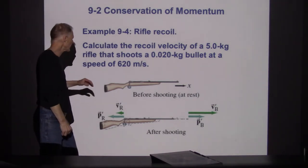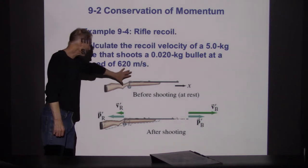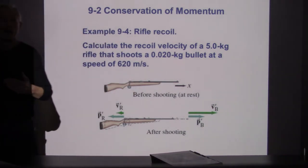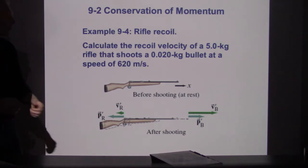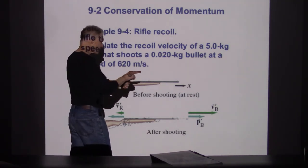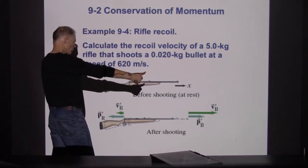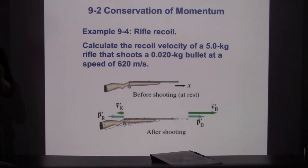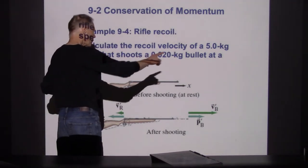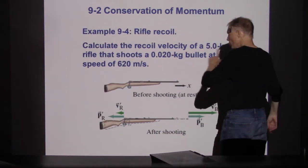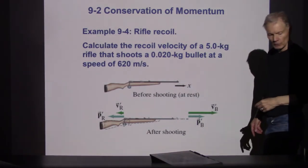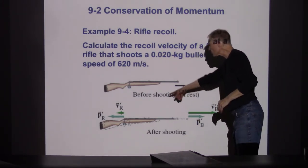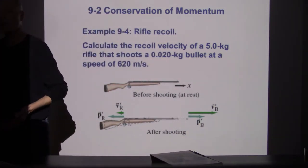Here's an example with shooting a rifle. In the before picture, the rifle is at rest — motionless. When you fire it, there is a force acting on the bullet in the forward direction, but there's an equal force acting oppositely, pushing back on the rifle. They both experience the same amount of force for the same amount of time, so whatever momentum the bullet acquires in this direction is matched by an equal amount of momentum pushing on the rifle in exactly the opposite direction.